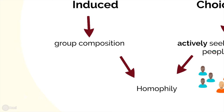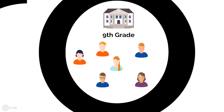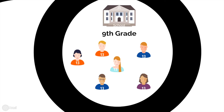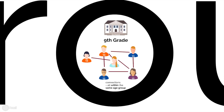Induced homophily suggests that shared group composition leads to homophily. For example, by design, the majority of school children in a class are around the same age, because there are hardly any students from a different age group. By chance alone, they are more likely to connect with other students of the same age group.